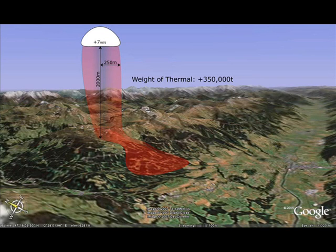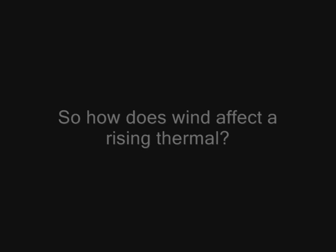That's a huge amount of momentum. Even a small thermal that's only 100 metres in radius and 500 metres high equals around 18,000 tonnes. Wind will only have a small effect on the momentum of this rising column, only slowly pushing the weaker lift as the stronger lift pushes against the wind. But this will be explained more later.